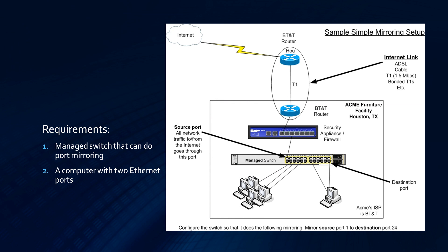First, let's look at a simple network diagram. In this diagram we have nothing fancy — just a bunch of PCs hooked up to a managed switch, that are hooked up to a firewall, and then the firewall is hooked up to an ISP router at their location, and then through a T1 goes to the internet.